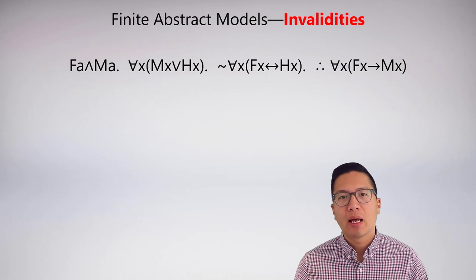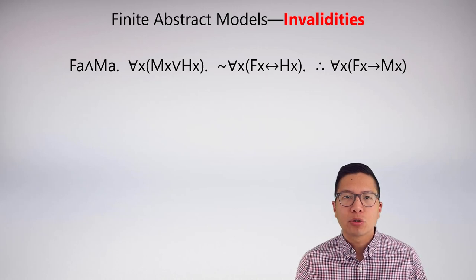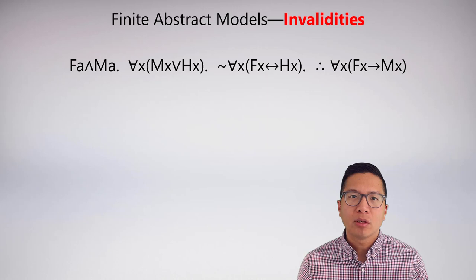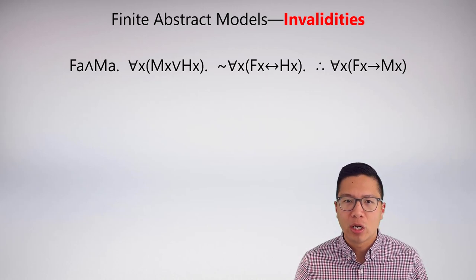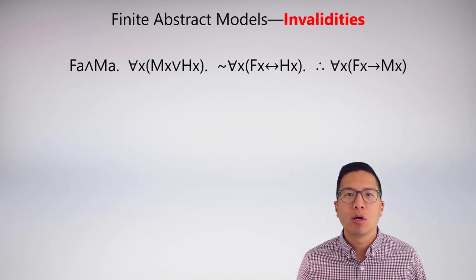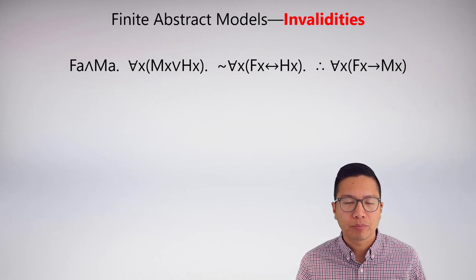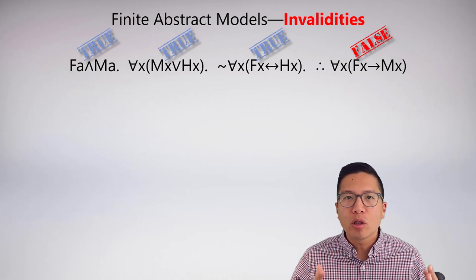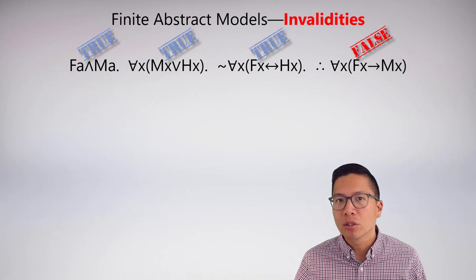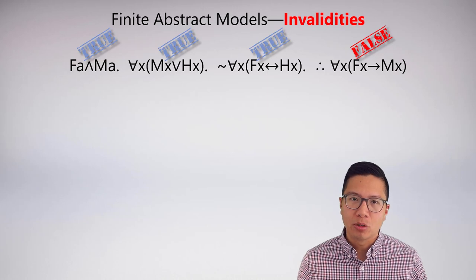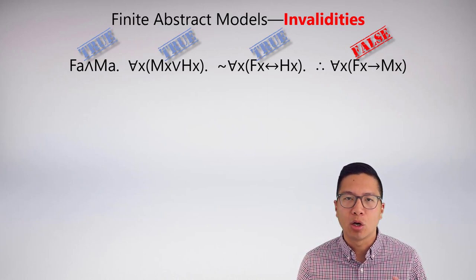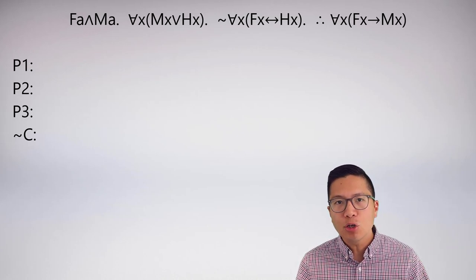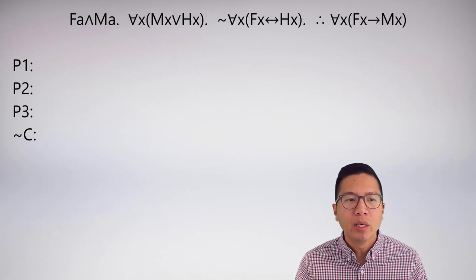In the last example I used a finite abstract model to demonstrate consistency. The most common usage, however, is to show that a particular argument is invalid — so we often call these counter-models. To show an argument invalid, I need a model where all the premises are true but the conclusion is false. If there's a single interpretation where all premises are true and the conclusion is false, that is enough to render an argument invalid. So we're going to abstractly translate our premises and the negation of the conclusion, then build our model.